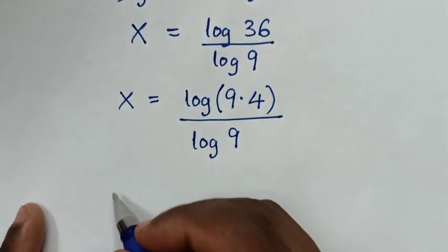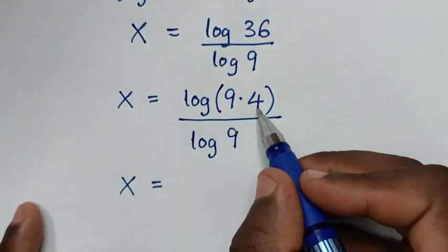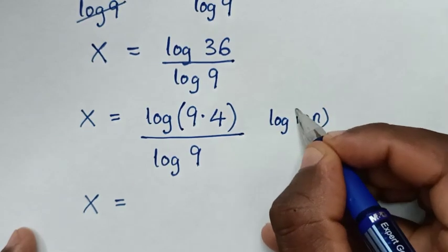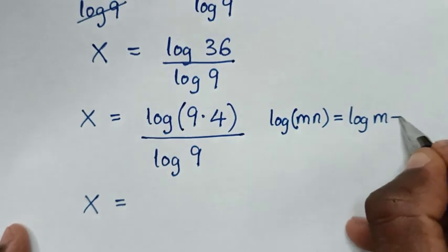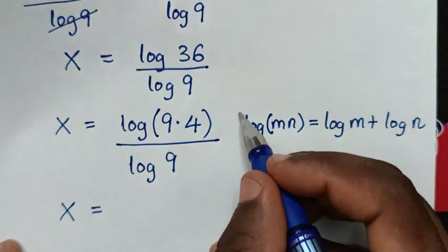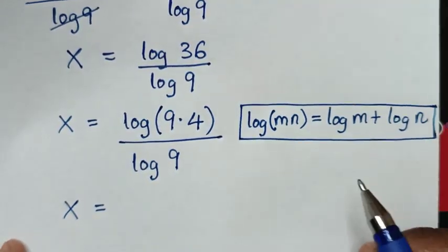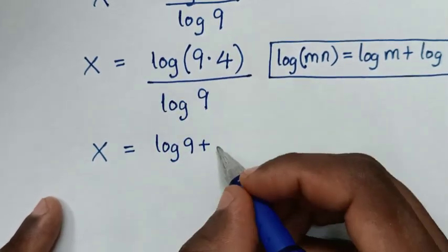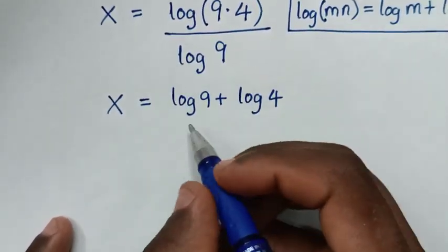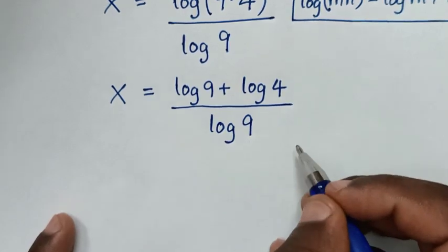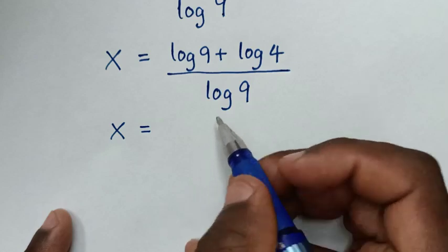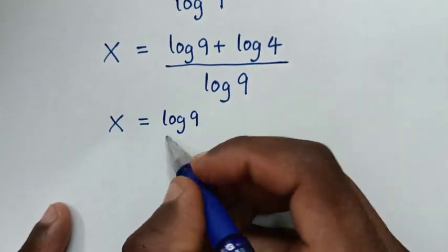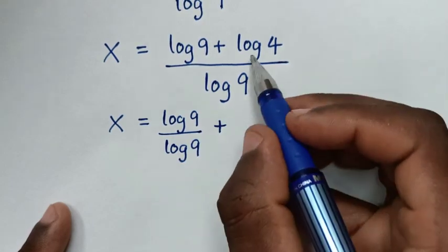Then in the next step, it will be x is equal to — from here, log of 9 times 4 in the numerator is in the form of log of m times n, which is equal to log of m plus log of n. So into here, it will be log of 9 plus log of 4, over log of 9.